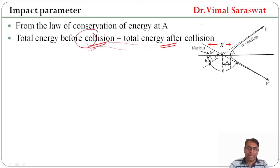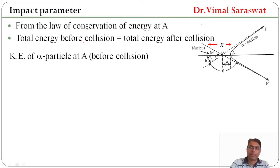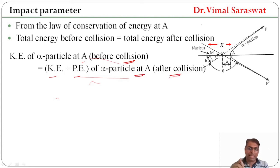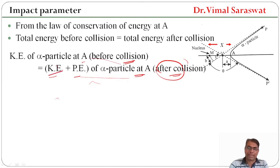Total energy before collision is kinetic energy. After collision, some part of kinetic energy is converted into potential energy. So kinetic energy of the alpha particle before collision equals kinetic energy plus potential energy of the alpha particle at A after collision.